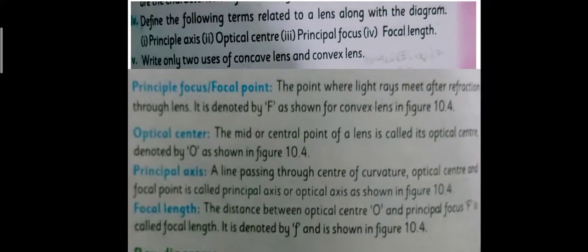These are short questions. And next is, fourth question is, define the following terms related to a lens, along with the diagram. And you know very well what is the principle axis, optical center, principle focus and focal lens. You just have to describe all these things, but not in so much detail, only give the sufficient answer.